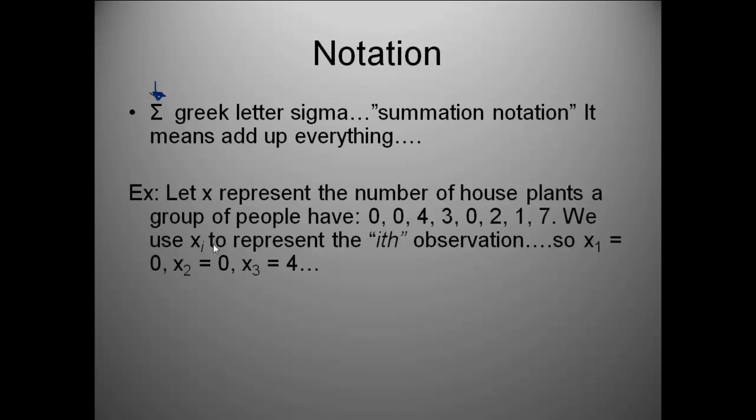So, here's our example. It says, let x represent the number of house plants a group of people have. And so here's our responses from the people we asked. It says we use x sub i to represent the ith observation. So x sub 1 would be equal to our first observation, which is 0. x sub 2 would be equal to our second observation. And x sub 3 would be our third observation.